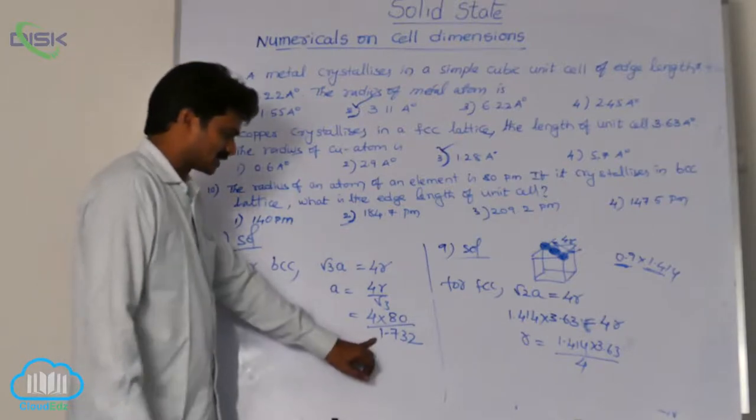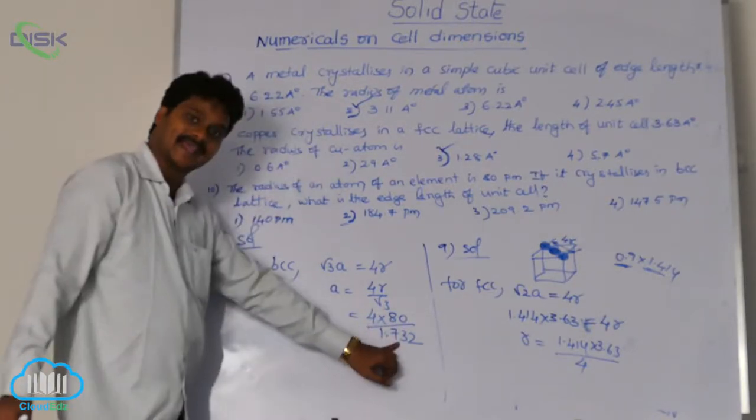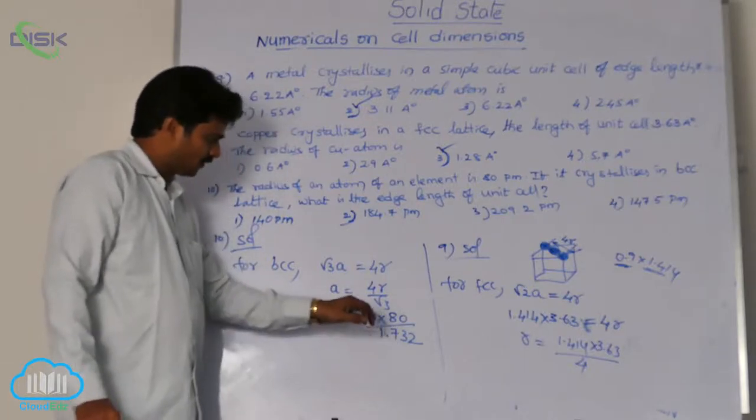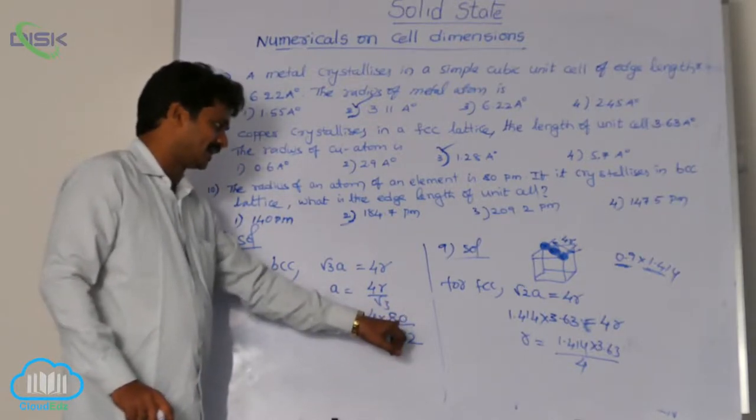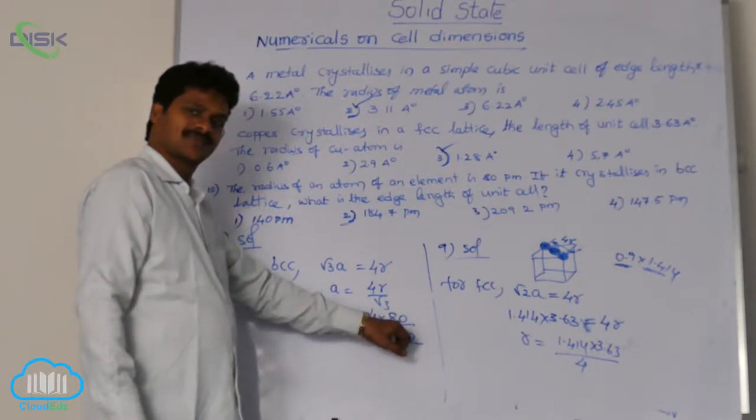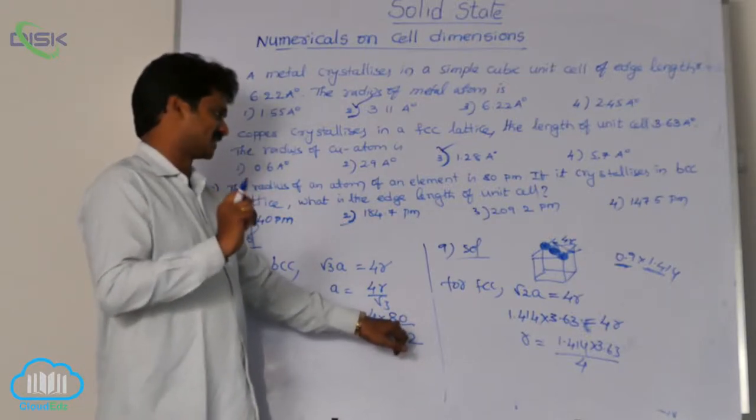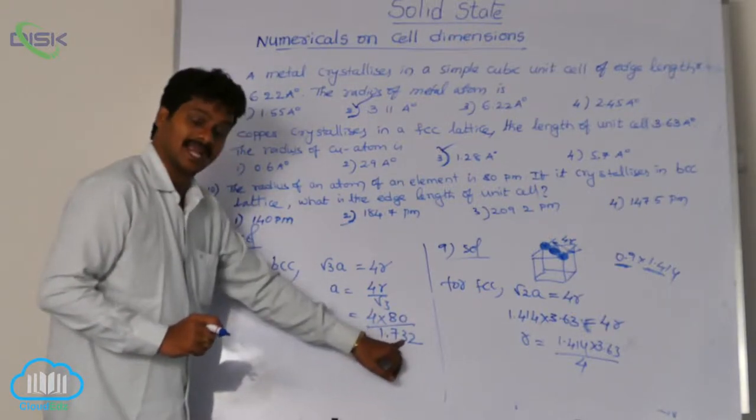If 1.732 is considered nearly 2, this 2 in 4, 2 times. So 2 into 80 is 160. The rough value is 160. But it is lesser than 2.